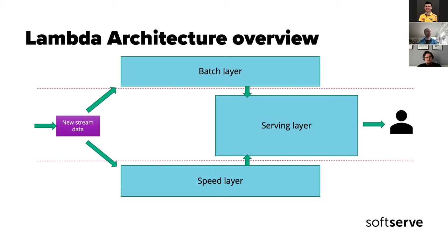This data is split into two processing layers. The batch layer gathers the stream, saves it as an immutable dataset, and then every so often — say once every day or 12 hours — processes it and sends it to the serving layer. The speed layer is responsible for reacting to events with the required latency: as data comes in we process it right away. Once both the batch layer and speed layer have processed the data, the serving layer prepares one comprehensive view that users can query.